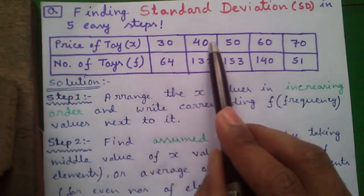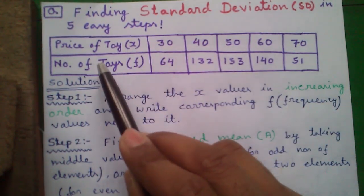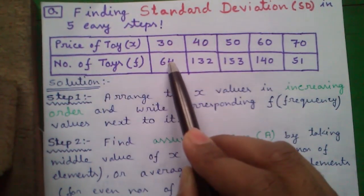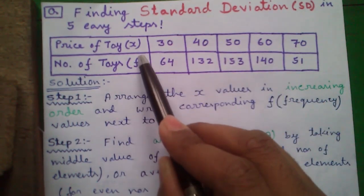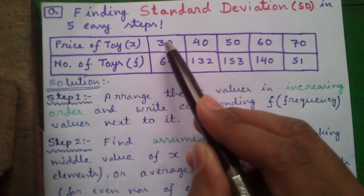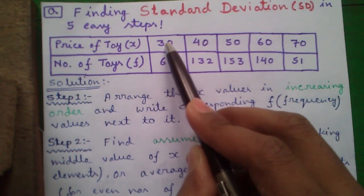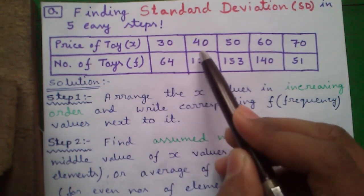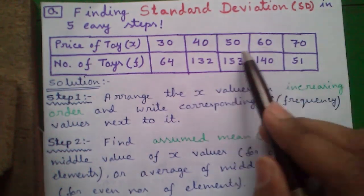Here prices of toys are given denoted by X and number of toys having the same price are denoted by F. It's also called frequency. That means 64 number of toys has the price of 30, 132 number of toys has the price of 40 and so on.